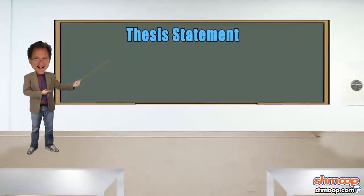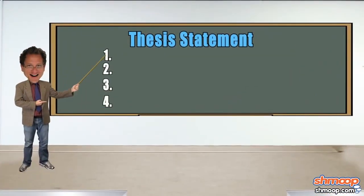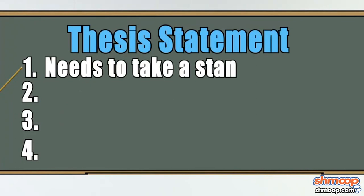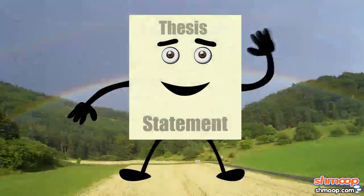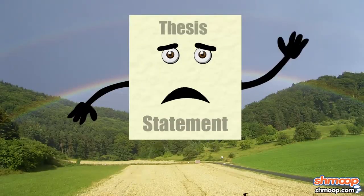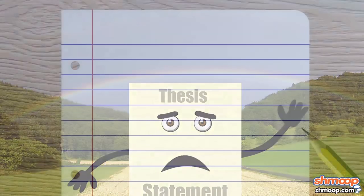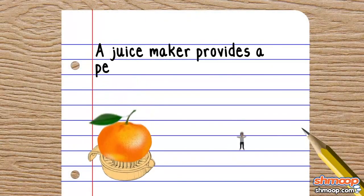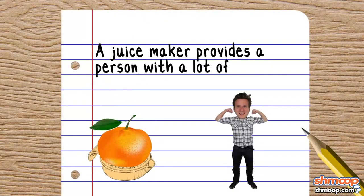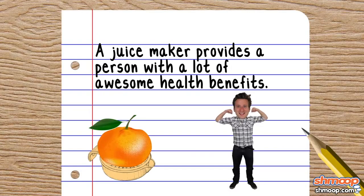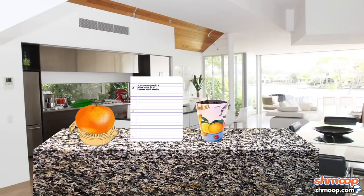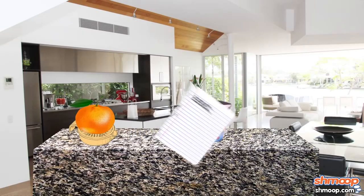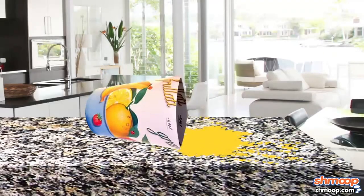Your thesis needs to do four things. First, it needs to take a stand. Here's a sample thesis without a leg to stand on: 'A juice maker provides a person with a lot of awesome health benefits.' That sentence is not a thesis sentence — it falls right over, spilling juice all over the place and staining your favorite shirt.